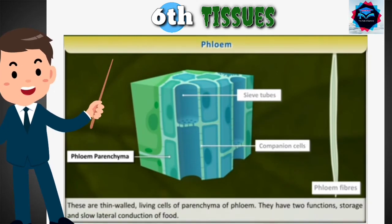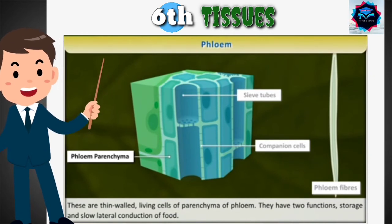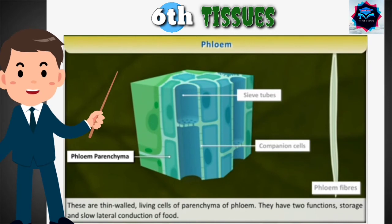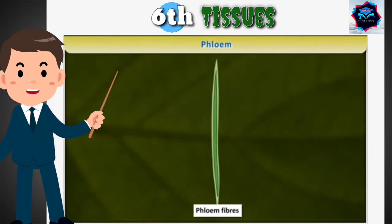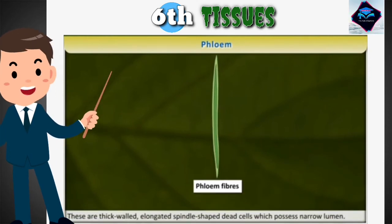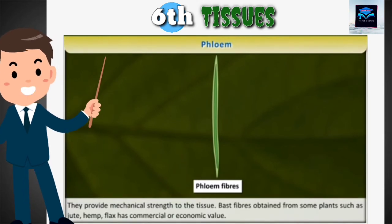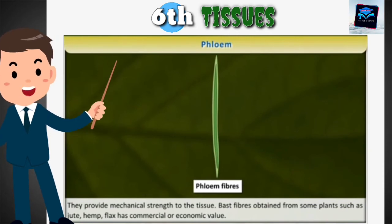Phloem parenchyma cells are thin-walled living cells; they have two functions: storage and slow lateral conduction of food. Phloem fibers, or bast fibers, are thick-walled, elongated, spindle-shaped dead cells which possess a narrow lumen; they provide mechanical strength to the tissue.